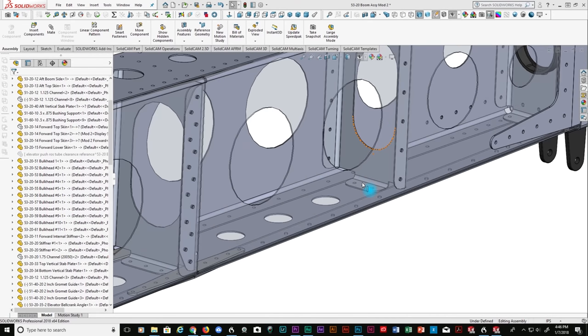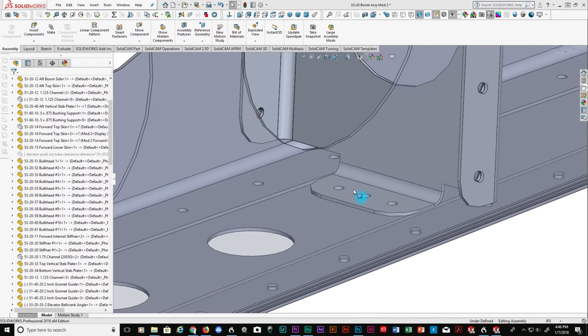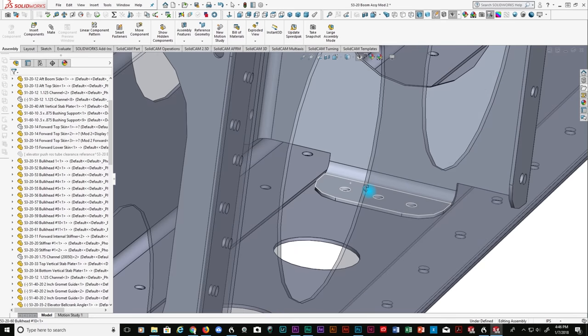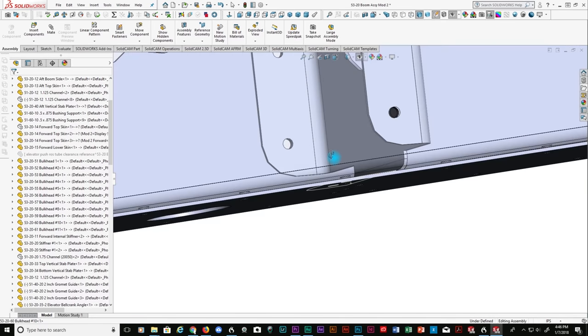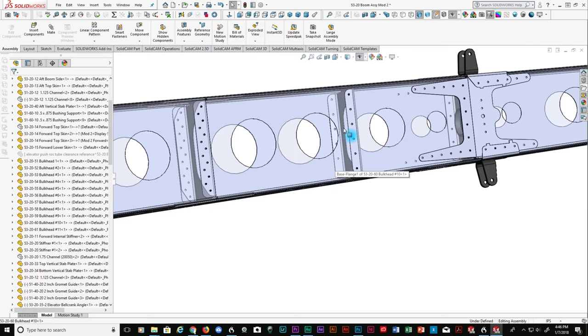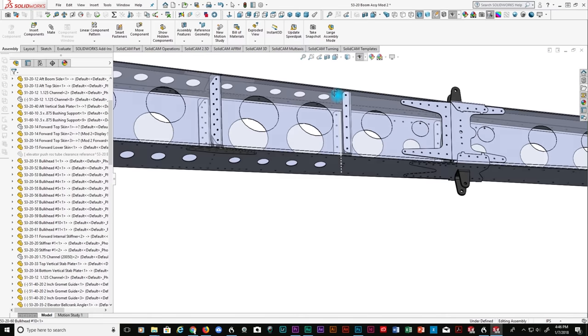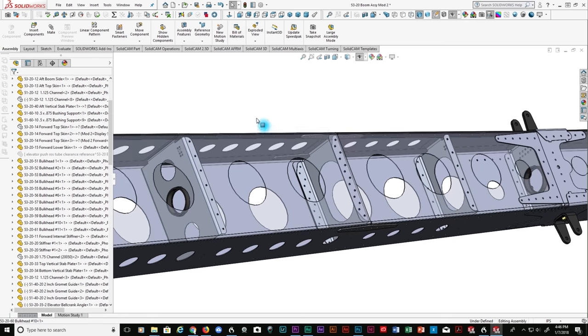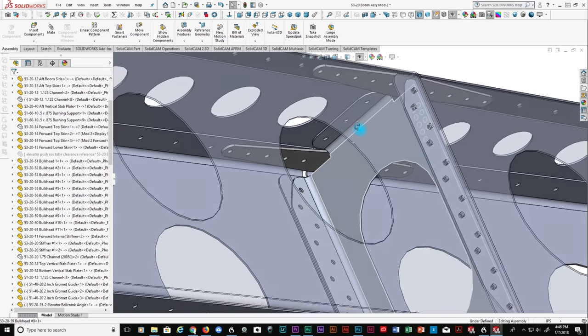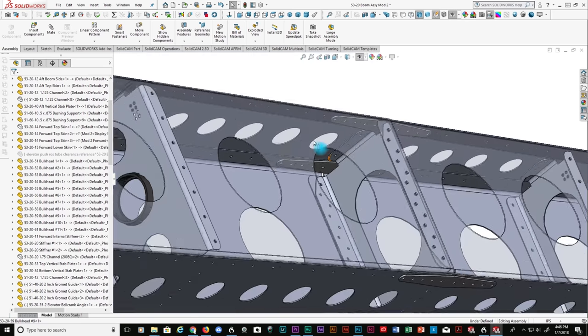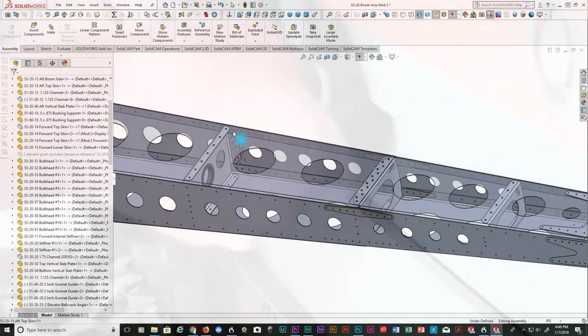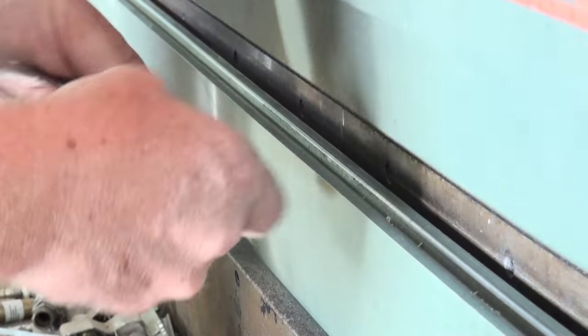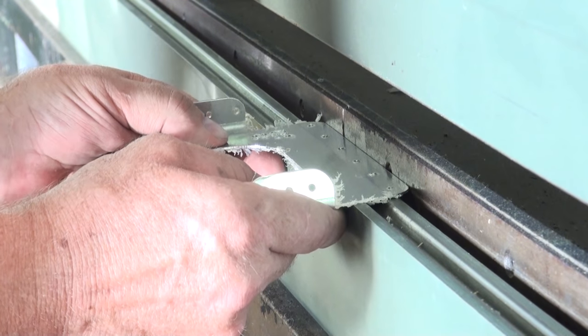We have designed the fuselage boom on the EMG-6 to utilize the same material throughout its construction. We've also designed into the majority of the components like the bulkheads the dimensions that result in setting up the CNC press brake for the least number of adjustments. The design of the individual bulkheads incorporates flanges that are offset from the sides to allow the upper and lower flanges to be bent first and then the two sides can be bent without setting up an additional set of dies.